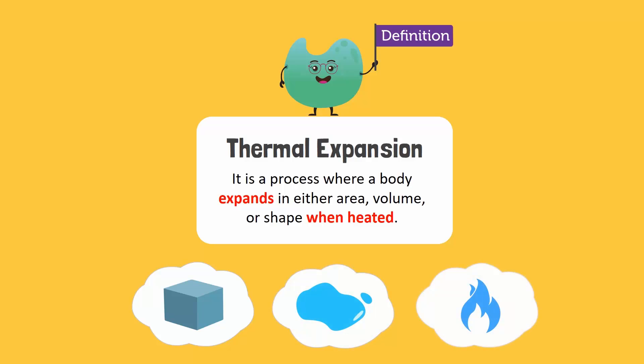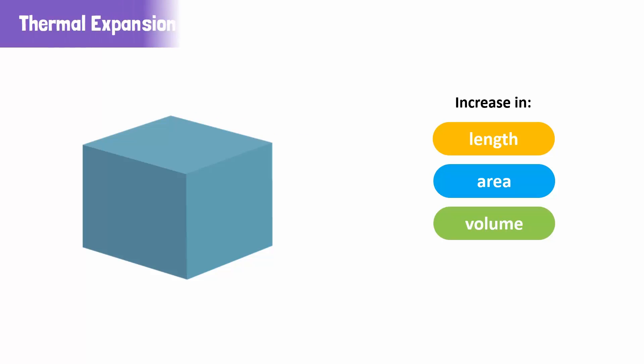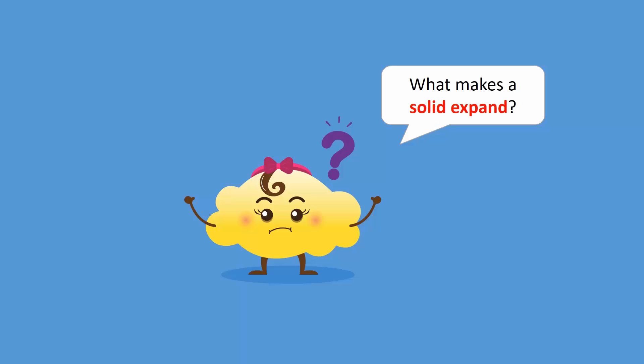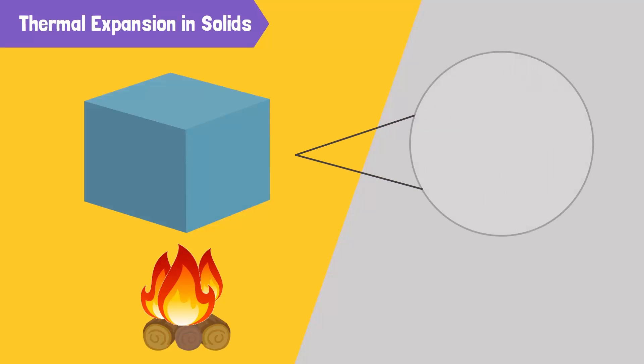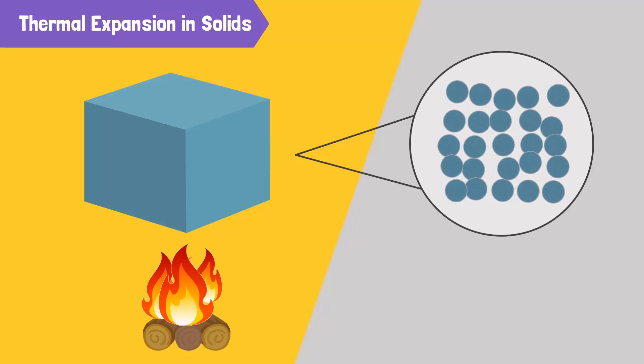First, let's consider solids. When a solid is heated, it expands in size and shape, resulting in an increase in length, area, or volume. This is known as thermal expansion of solids. But what makes a solid expand? When a solid is heated, the molecules that make up the solid begin to vibrate.